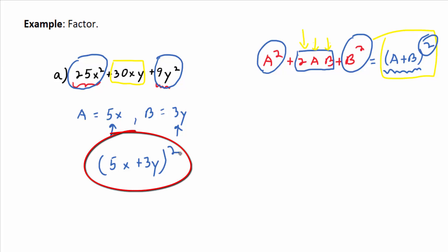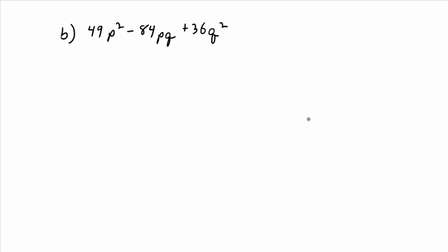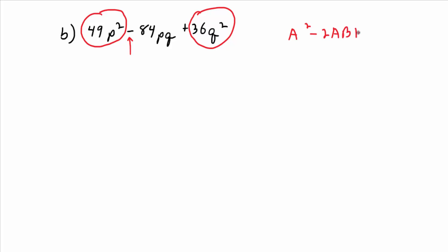Part b: 49p² − 84pq + 36q². First, check for a GCF — 49 is odd so there's no common factor. I do see a minus, and I recognize that 49p² is a perfect square and 36q² is a perfect square. So it's possible the formula a² − 2ab + b² = (a − b)² applies. To check, identify a: what do you square to get 49p²? That's 7p. And b: what do you square to get 36q²? That's 6q.